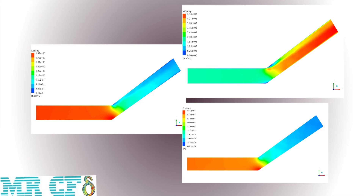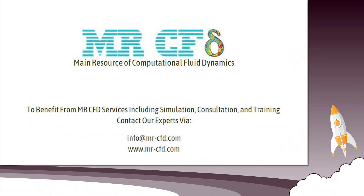As shown in the contours, pressure drops about 120 kPa during the path and causes extreme variable distribution through the pipe. There is a direct correlation between density and pressure, and they both experience an extreme reduction in values after the bending zone. But velocity behavior is totally the opposite, as expected.